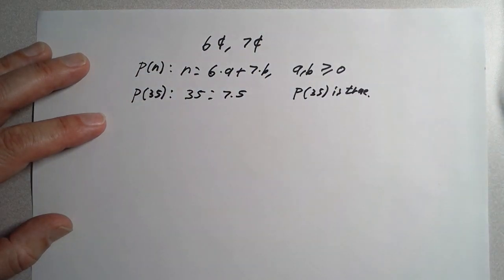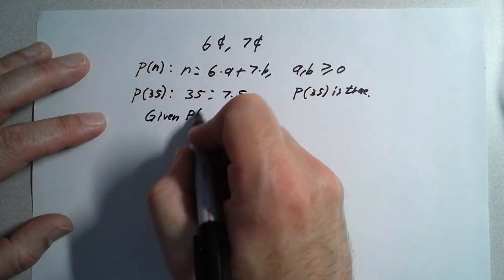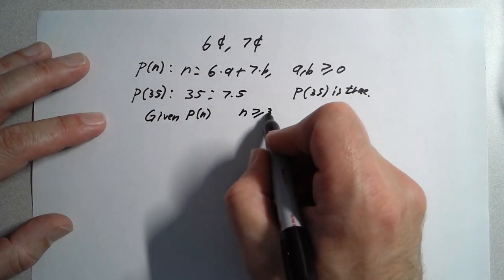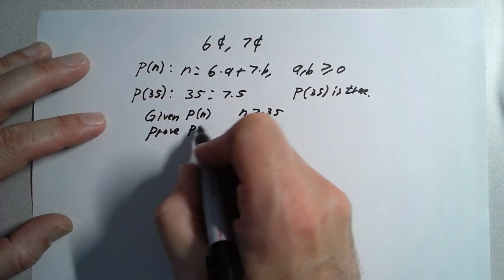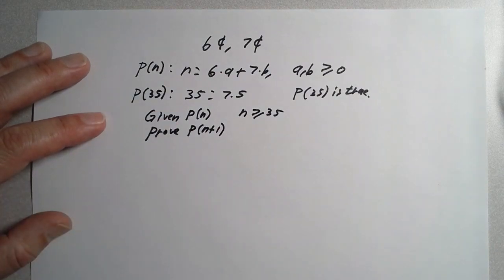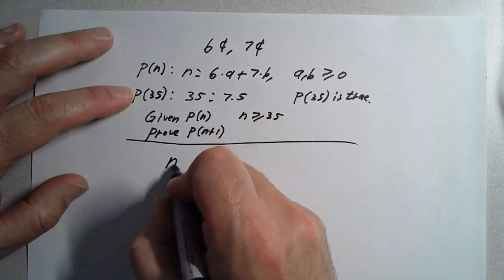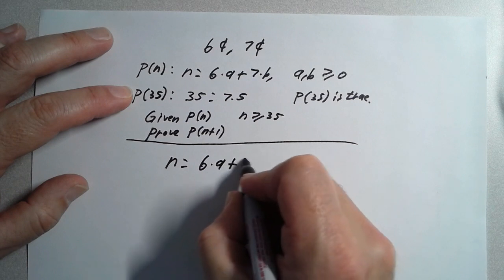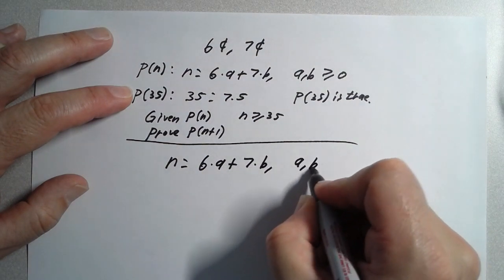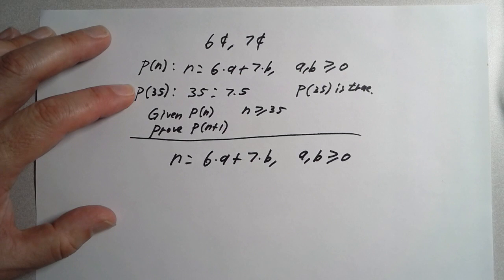To do the induction we need to show the following: given P(n) where n is greater than or equal to 35, prove P(n+1). If we can do that, then given the base case P(35) we can conclude by mathematical induction that P(n) is true for all n ≥ 35. P(n) says n equals six times a plus seven times b, where a and b are greater than or equal to zero.